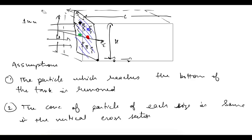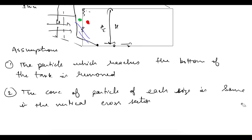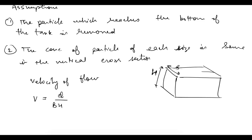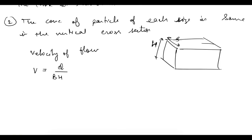Now, the velocity of flow: the cross-sectional area in the flow direction is B × H, so the velocity of flow V = Q / (B × H), where Q is the discharge.